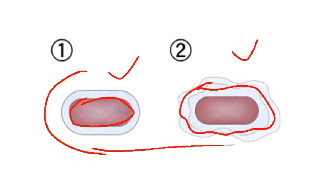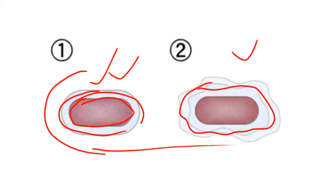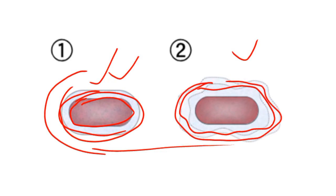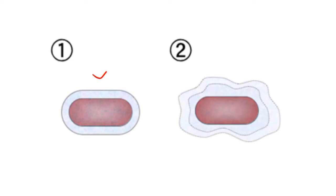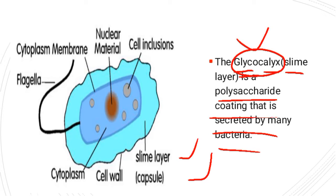So what's the difference? The difference is that the capsule is tightly adhered to the bacteria, as you can see here, while the slime layer is loosely organized. We already discussed about the capsule. Today we will discuss about the slime layer. The slime layer is a glycocalyx or polysaccharide coating that is secreted by many bacteria. Remember, glycocalyx is a non-essential component — it is present in some species of bacteria, not all.